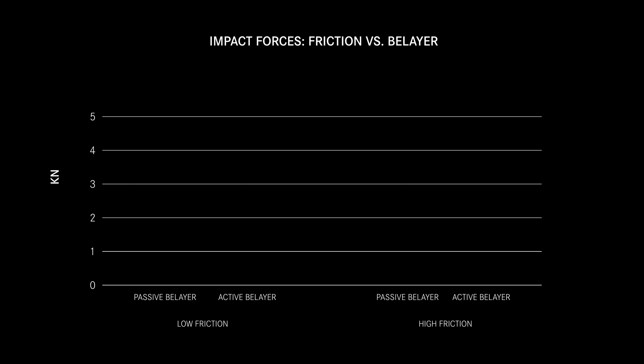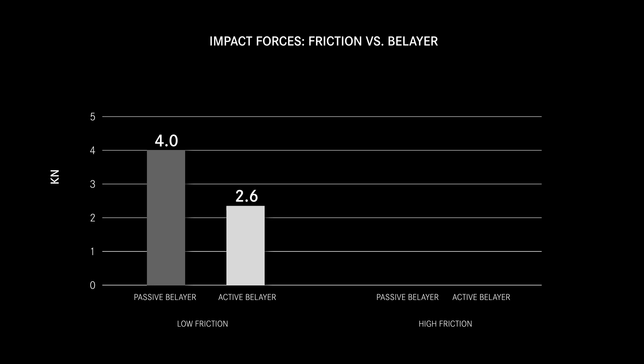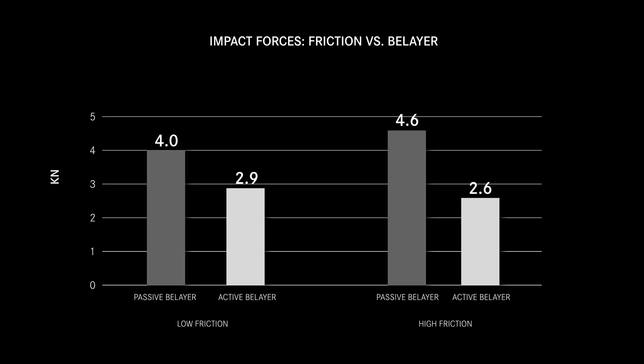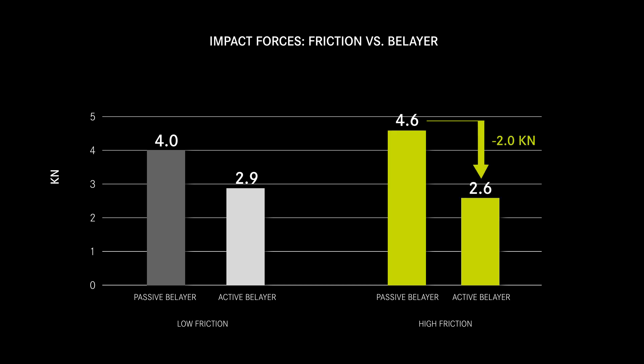Now we can compare our impact values. We compare the setups of low friction passive and active behavior with the forces of high friction passive and active behavior. It shows that with passive behavior the forces between high and low friction only change by 0.5 kN. In parallel, it shows that with active behavior the forces also change only slightly, independent from the friction in the system. Whereas from active behavior to passive behavior the forces can easily increase by almost 2 kN, as we can see when comparing the high friction situation with active versus passive behavior.